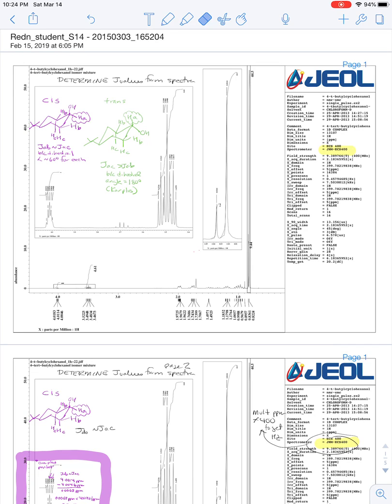Here's a spectrum taken by students a couple semesters ago of the mixture of cis and trans alcohols from the reduction, and our mission here is to determine the J values from the spectrum.